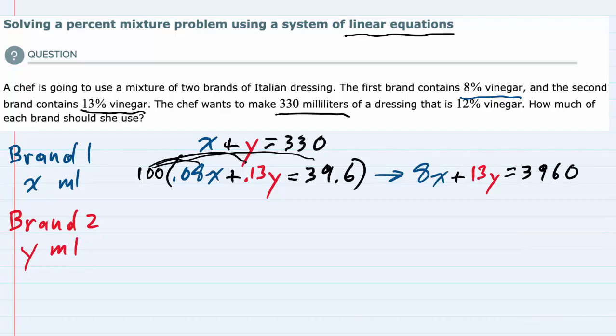To get one of the terms to cancel, I'll multiply the top equation by -8 to cancel the x's. Distributing: -8 times x is -8x, -8 times y is -8y, and -8 times 330 is -2640.